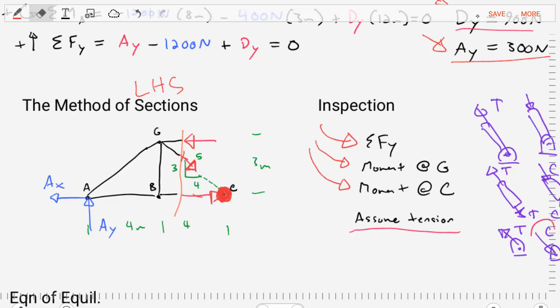But, this inspection method is challenging. It's not for everybody. So, another option that we can take is that we can assume that all the members are in tension. We can just make that as an initial assumption.